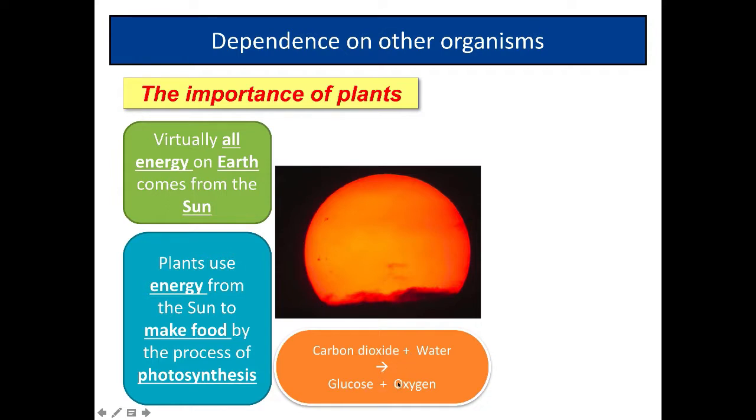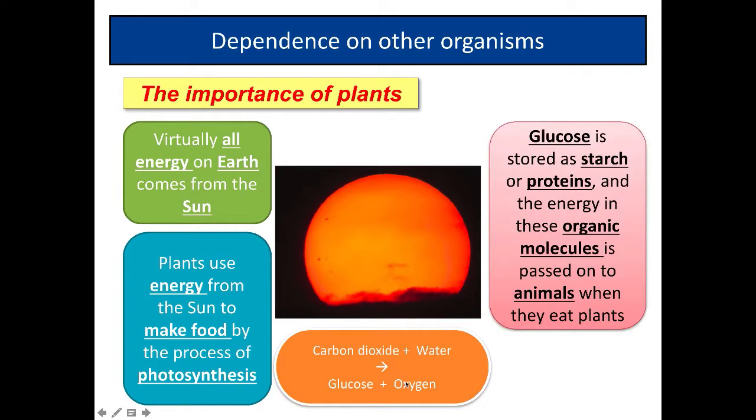We're going to look at this in much more detail in later videos. What happens here is that glucose is stored as starch or proteins. The energy in these organic molecules—glucose and starch—is passed on to animals when they eat plants.